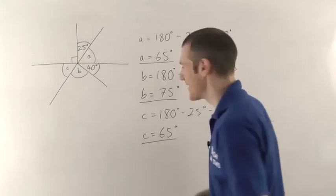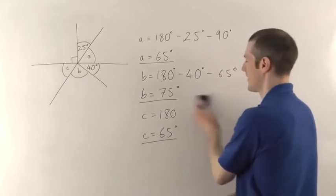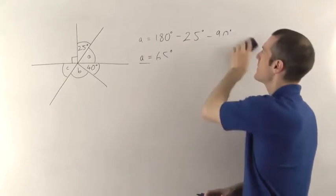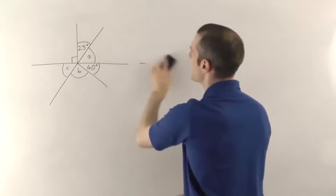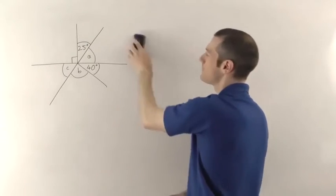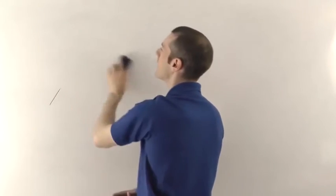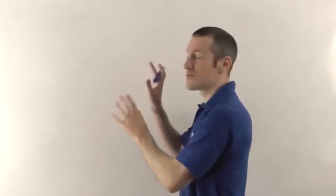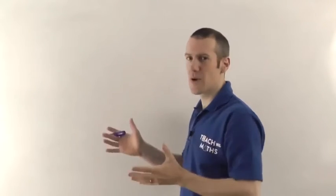Let's make it slightly harder. We're going to introduce some parallel lines now. You do need to remember the rules to do with parallel lines — corresponding, alternate interior — and even if you can't remember the names, you need to remember the facts. If you know what the facts are, you'll be able to work out the angles without too much trouble.